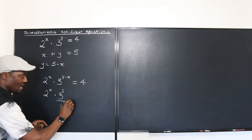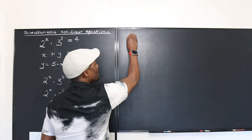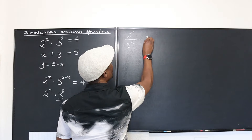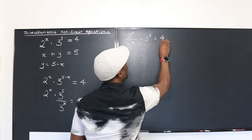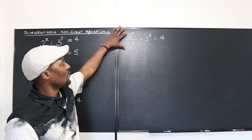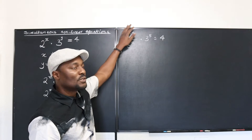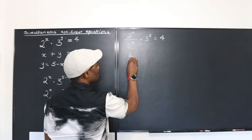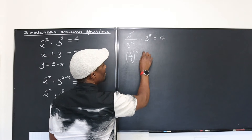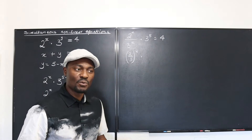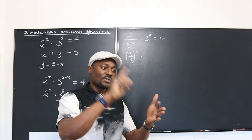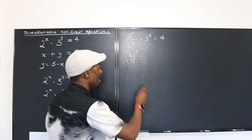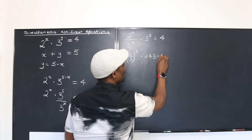I can rearrange this expression as 2 to the x divided by 3 to the x, multiplied by 3 to the 5, equals 4. Applying the law of exponents, when you have 2 to the x over 3 to the x, since the exponents are the same, you can combine the bases and write it as (2/3) to the x. And 3 to the 5 is 3 times 3 times 3 times 3 times 3, which is 243. So (2/3) to the x multiplied by 243 equals 4.